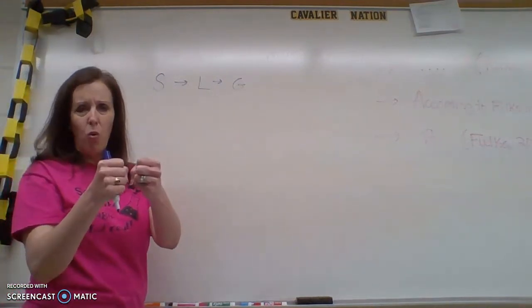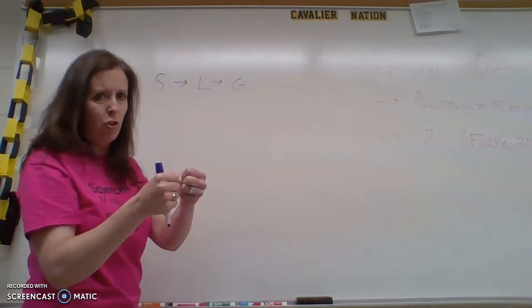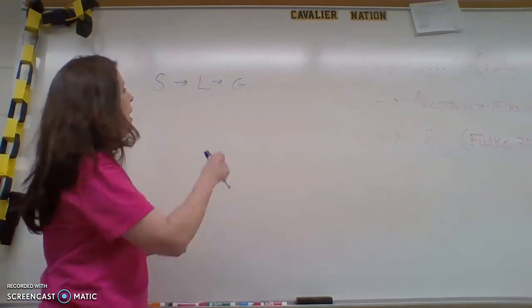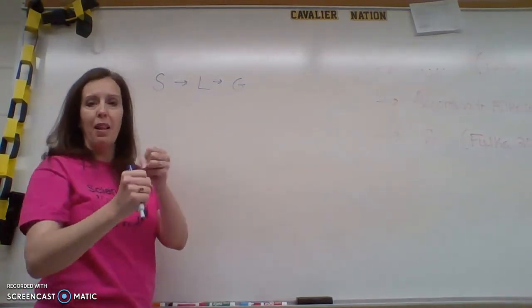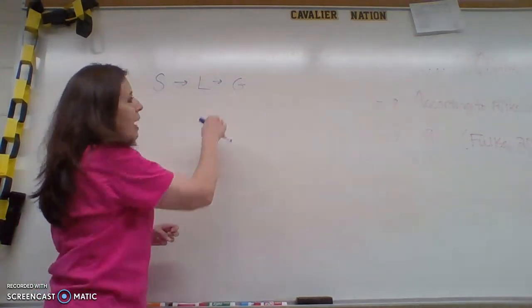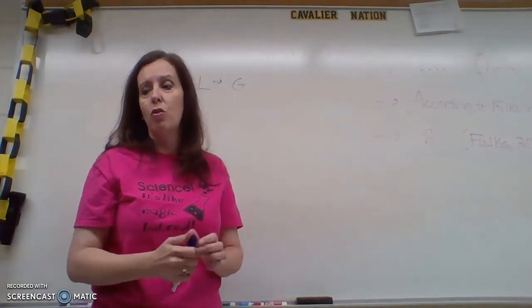Well, one of the ways we do it is just by changing the state. Solids, we know, are pretty orderly, so they don't have a lot of entropy. So if I melt them, I can increase entropy when I become a liquid because it moves around a little more. And then gases have a ton of entropy.